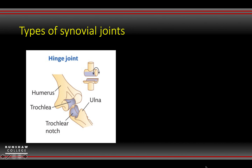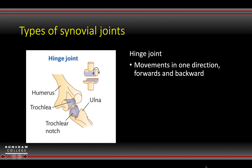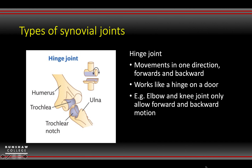Then you've got your hinge joint. This has a very specific tracking movement — you can't do lots of movements. It is pretty much forwards and backwards, or flexion and extension, a bit like the hinge of a door. The elbow, knee joint, and ankle are all hinge-type joints.